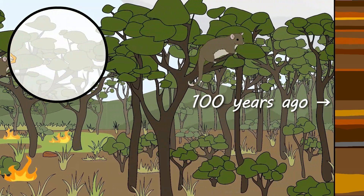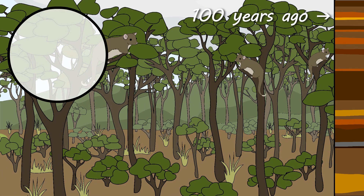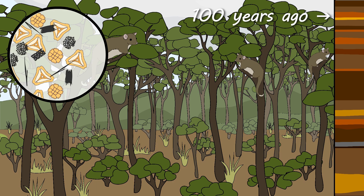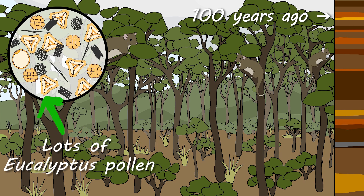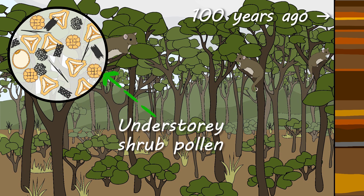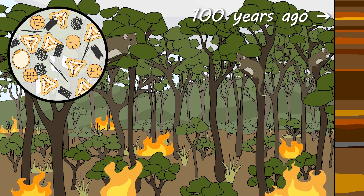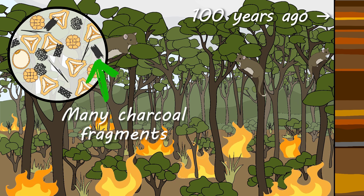After the start of British colonisation in Australia in 1788, many Aboriginal nations were forced to stop using fire to manage the vegetation on country. Scientists can see the impact of this in the pollen and charcoal records from around Australia. Bushland became less open and filled with smaller shrubby plants. Fires became less frequent but were often much larger and more destructive.